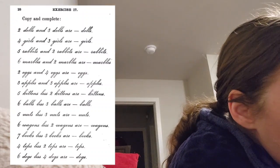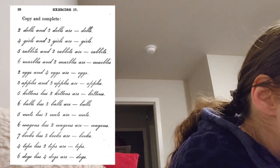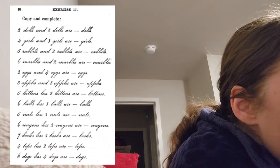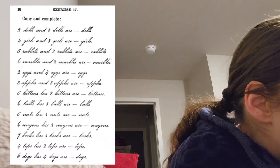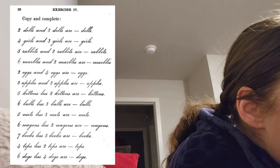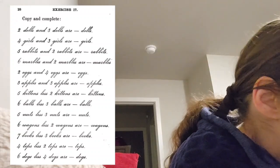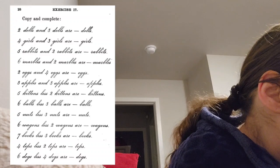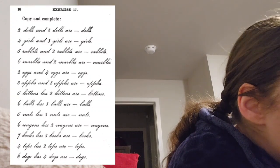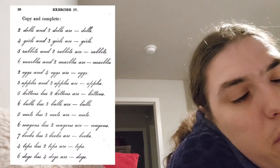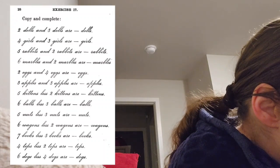Three apples and three apples are six apples. There's a lot of rating here. Five kitchens less two kitchens are three kitchens. Six balls less three balls are three balls. Five nuts less three nuts are two nuts.